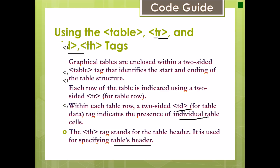The general table syntax is: table, tr, td for the first cell, second cell, slash tr for the first row, then tr, td for the third cell, fourth cell, slash tr for the second row, then slash table. This is an example of a table with two rows and two columns.